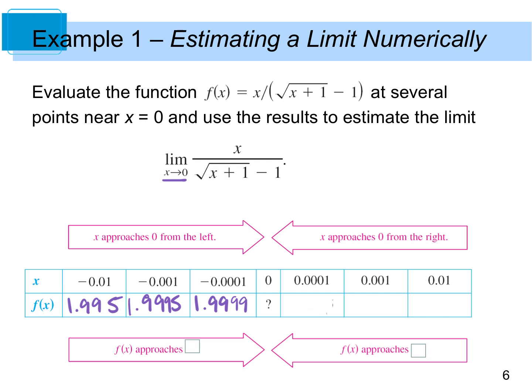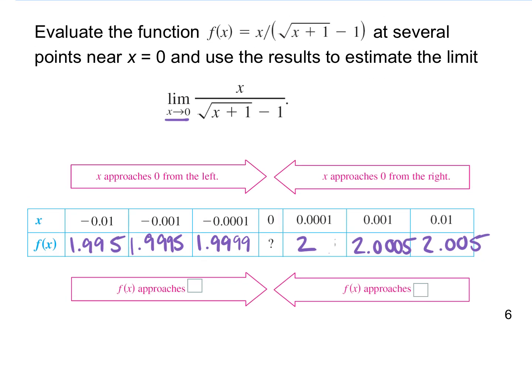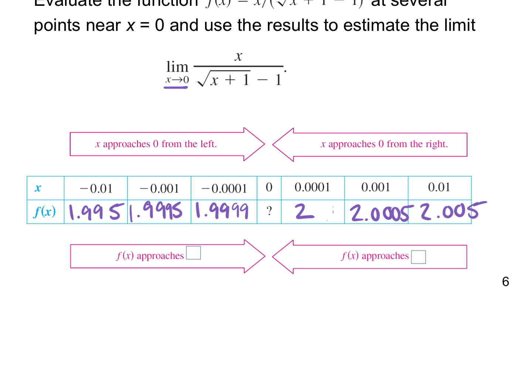Positive 0.001 gives 2.0005, and 0.01 gives 2.005. Coming from the left side and from the right side, what number are we getting close to? From the left we're approaching 2, and from the right we're also approaching 2. Since they approach the same value, our limit as x approaches 0 is 2.